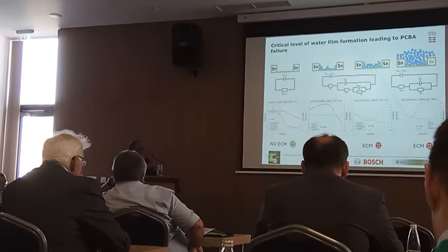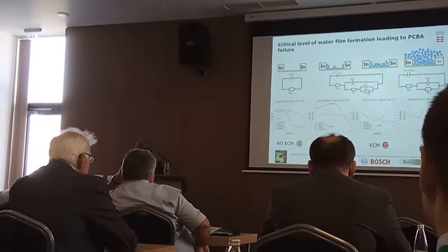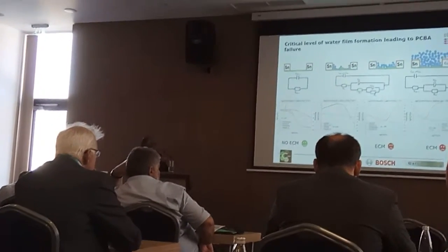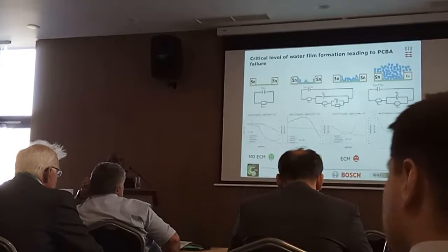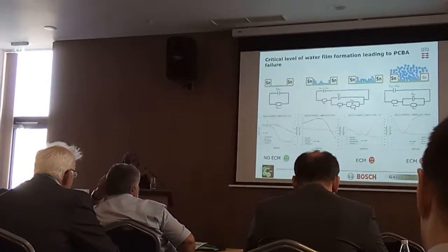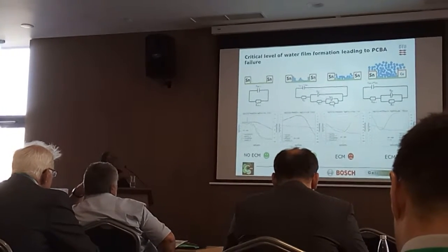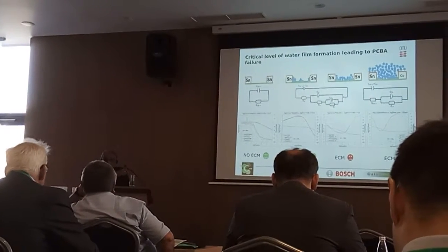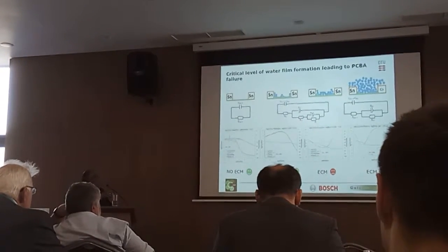We correlate that with the DC measurements. You can see that when you reach that level of water layer, you also start getting electrochemical migration, which means that there is a critical level of water layer required for the immediate failure, and this critical level determines what kind of failure can happen. This also raises the question: how can we keep the water layer thickness below the critical level? That is basically what we are trying to do.